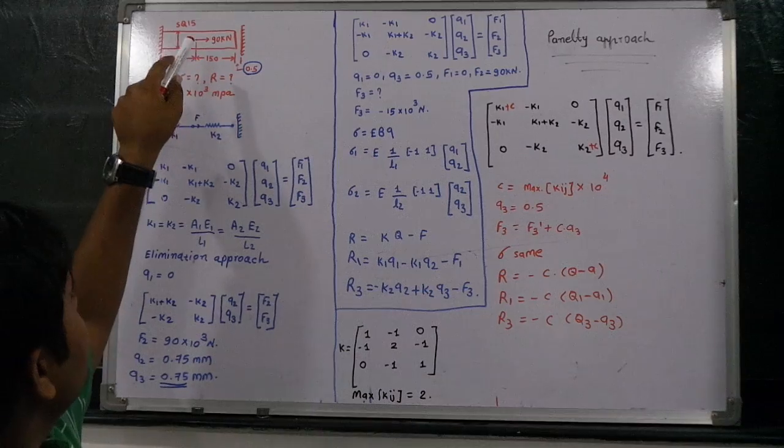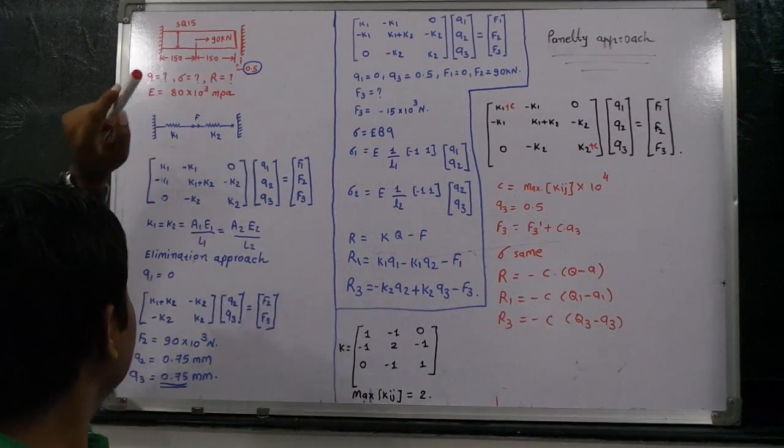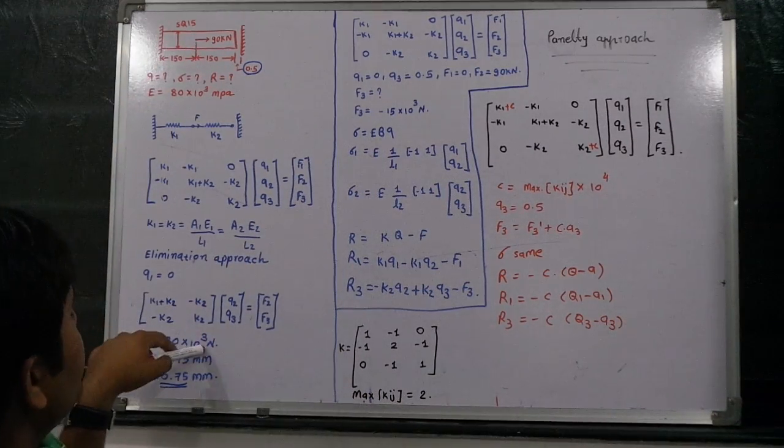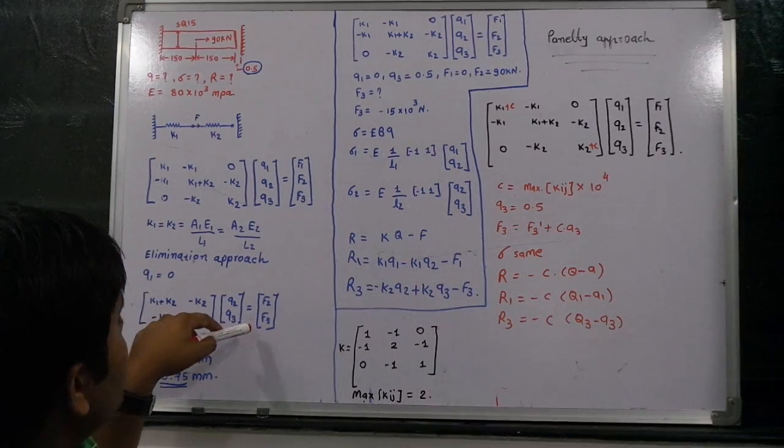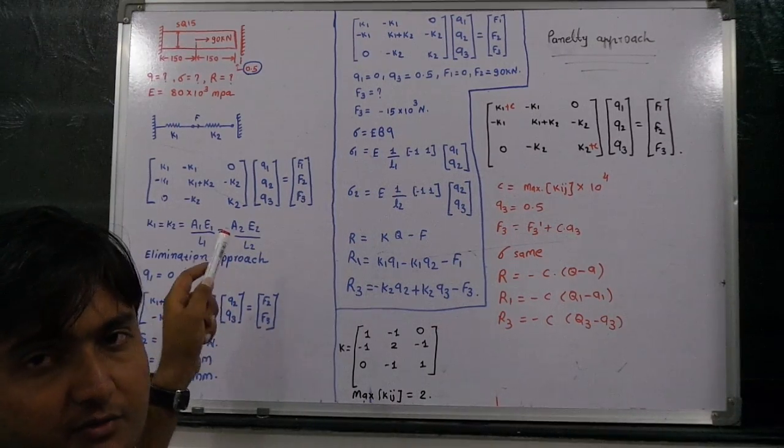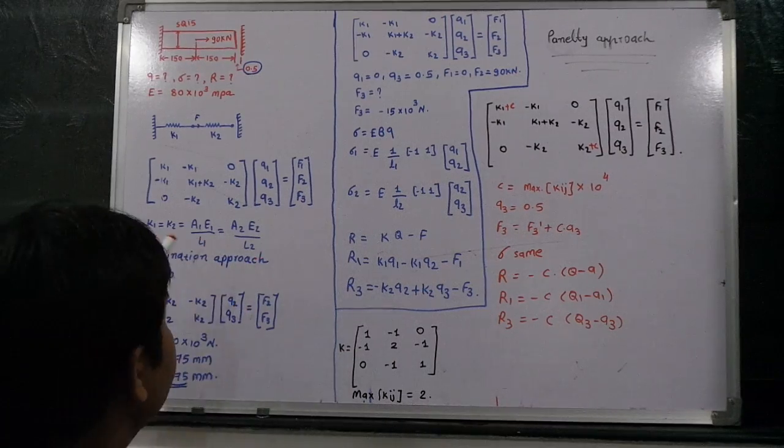The value of f2 would be 90 kilonewton equal to 90 multiplied by 10 raised to 3 Newton. The value of f3 would be 0 as we are assuming that it is a fixed support.